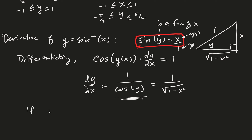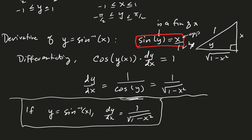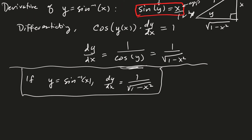Therefore, if y equals inverse sine of x, then dy/dx equals 1 over the square root of 1 minus x squared. That's the derivative of the inverse sine function.